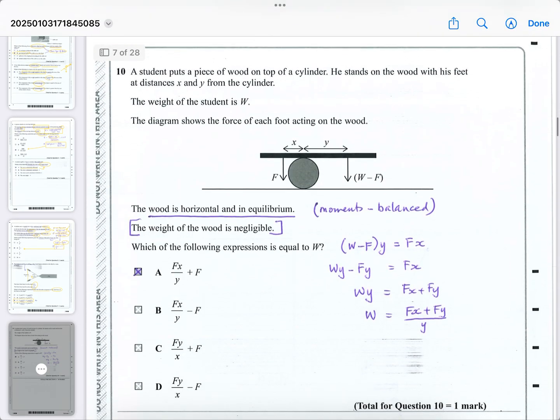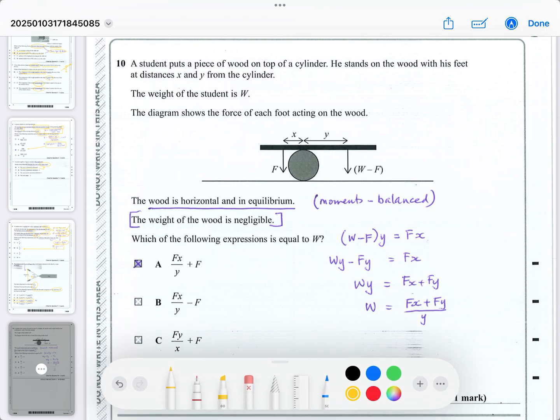So that's number nine. One question to go. And this is about moments. Student puts a piece of wood on top of a cylinder. So it's balancing on the cylinder. He stands on the wood to keep it balanced. And his feet are at distances X and Y from the cylinder, which acts as the balancing point or the pivot. The weight of the student is W. So between the two feet, W minus F and F, they add up to W. So basically, the total downward force of those two forces will equal the total weight, which is the weight of the student. Because it says the weight of the wood that he's standing on can be ignored. It's negligible.